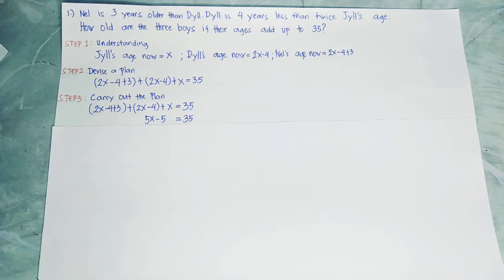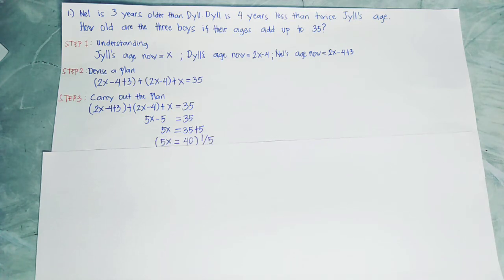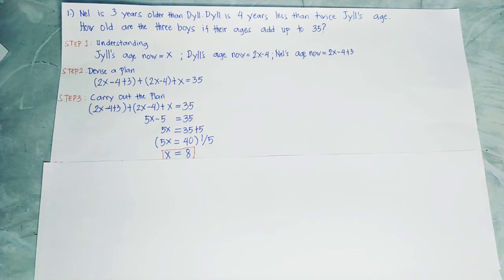5x minus 5 equals 35. Transpose negative 5 to the other side, so 5x equals 35 plus 5, which gives 5x equals 40. Multiply both sides by one fifth, so the answer is x equals 8.